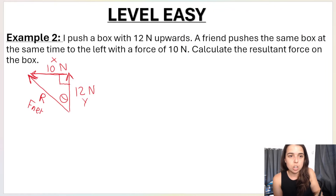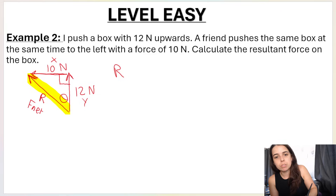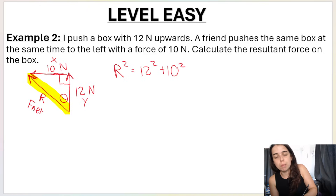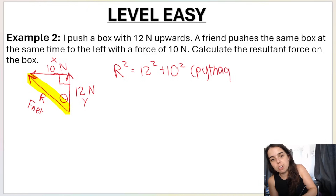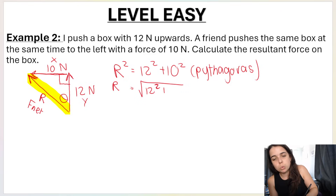Using Pythagoras to find R: R² = 12² + 10² (Pythagoras theorem). To find R, we square root both sides: R = √(12² + 10²).